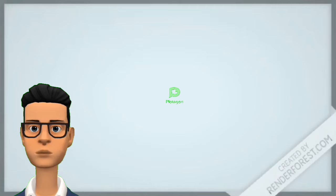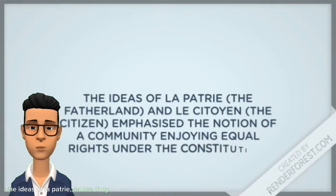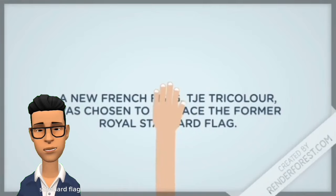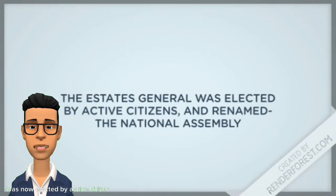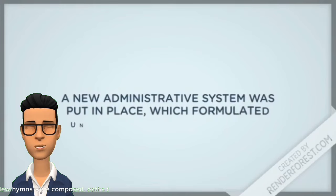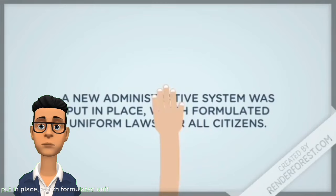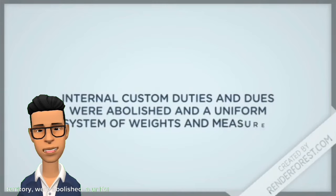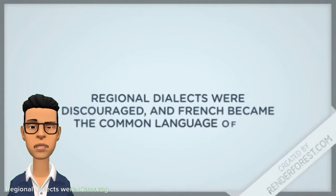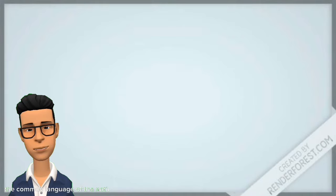The ideas of La Patrie and La Citoyen emphasized the notion of a united community enjoying equal rights under the constitution. A new French flag, the tricolor, replaced the royal standard flag. The Estates General assembly was now elected by active citizens and was renamed as National Assembly. New hymns were composed, oaths taken, and martyrs commemorated. A central administrative system was put in place which formulated uniform laws for all citizens. Custom duties and dues within the territory were abolished. A uniform system of weights and measures was adopted. Regional dialects were discouraged, and French, spoken in Paris, became the common language of the nation.